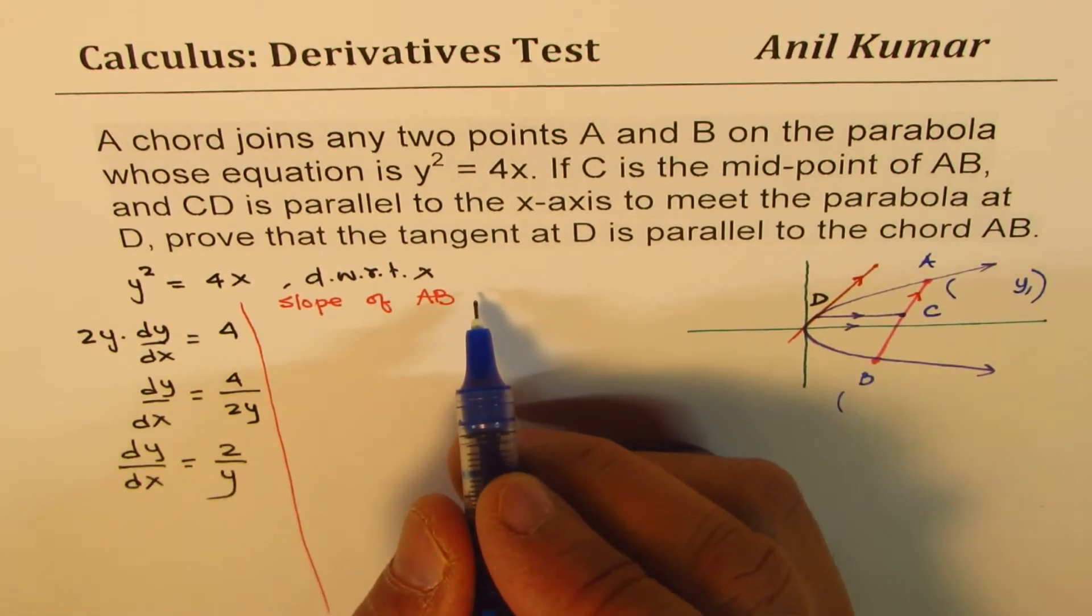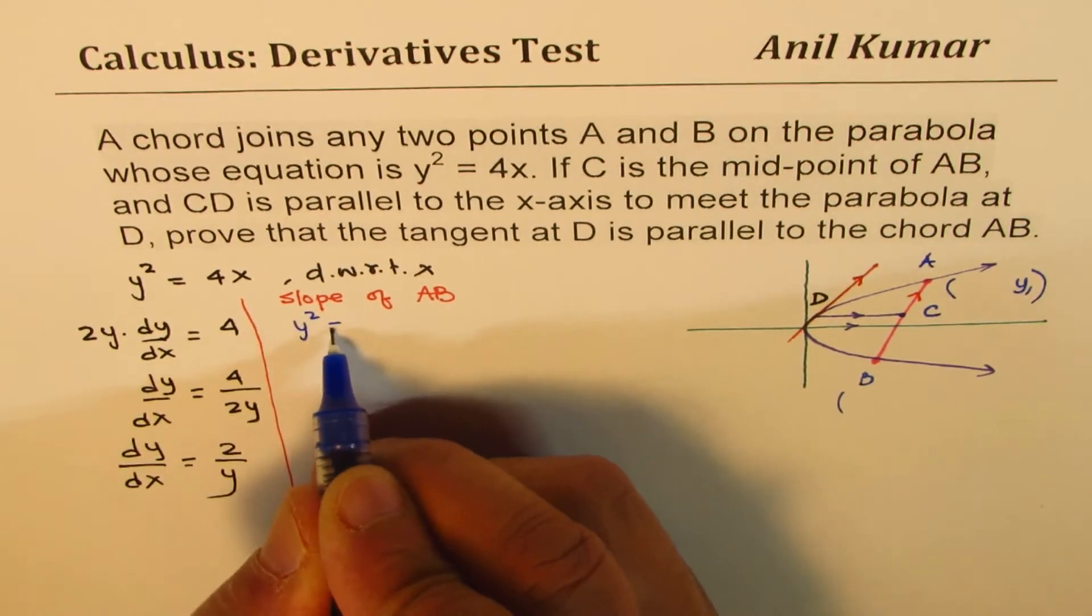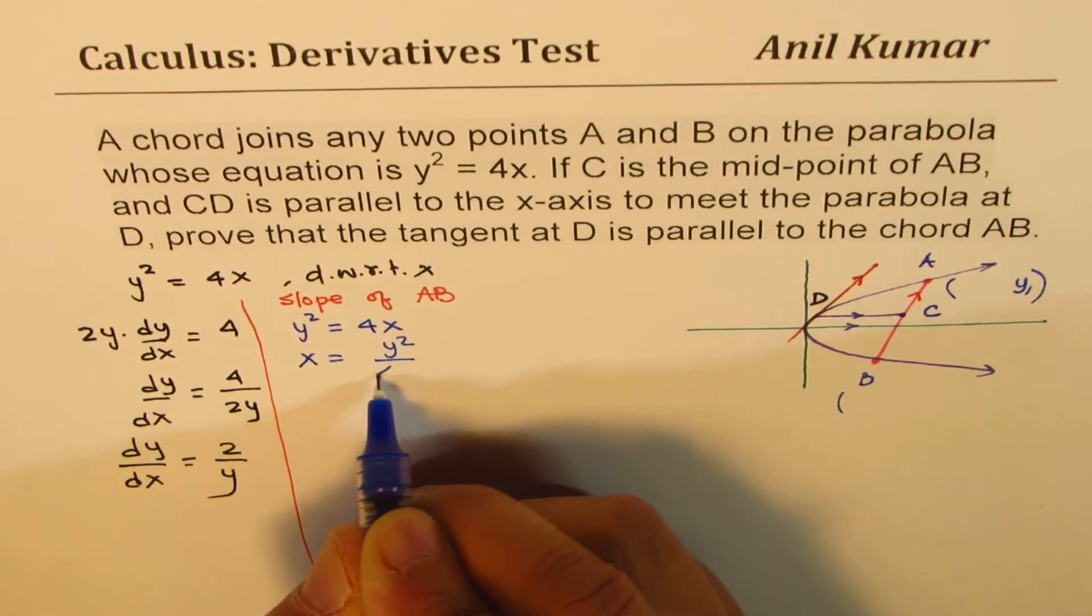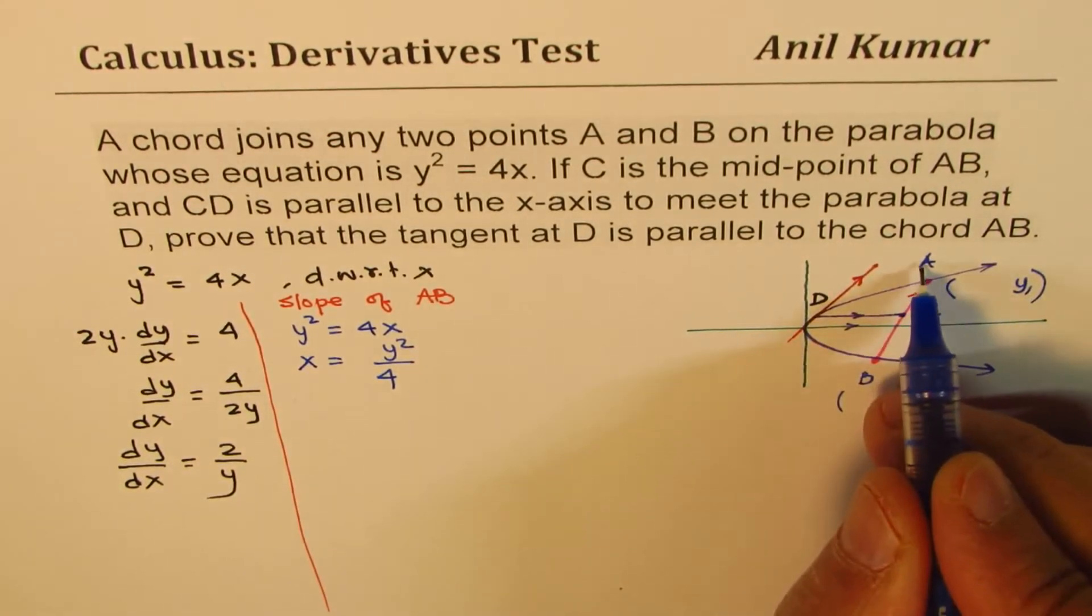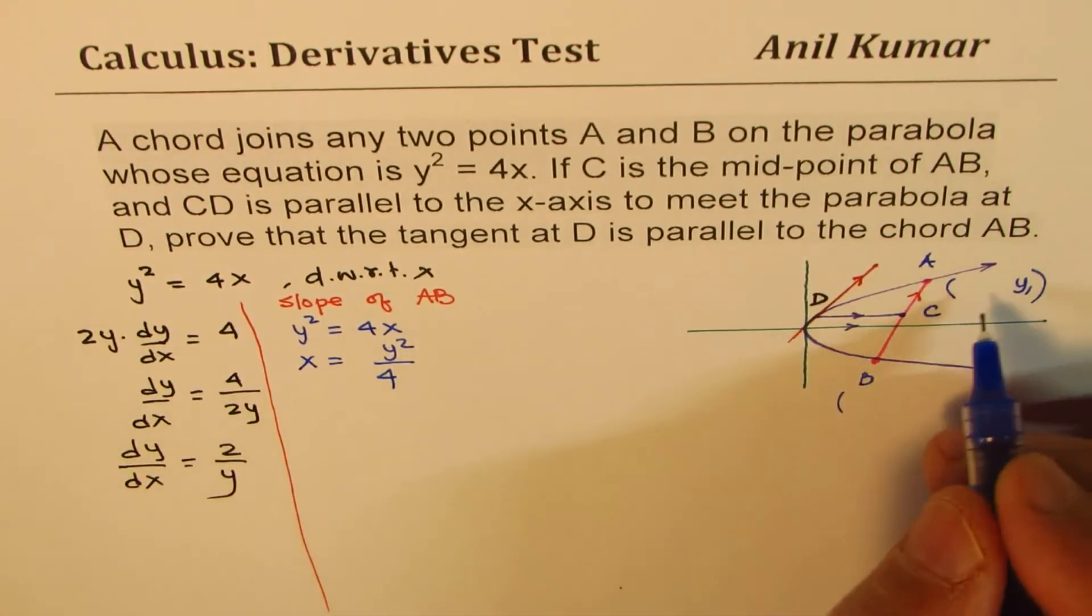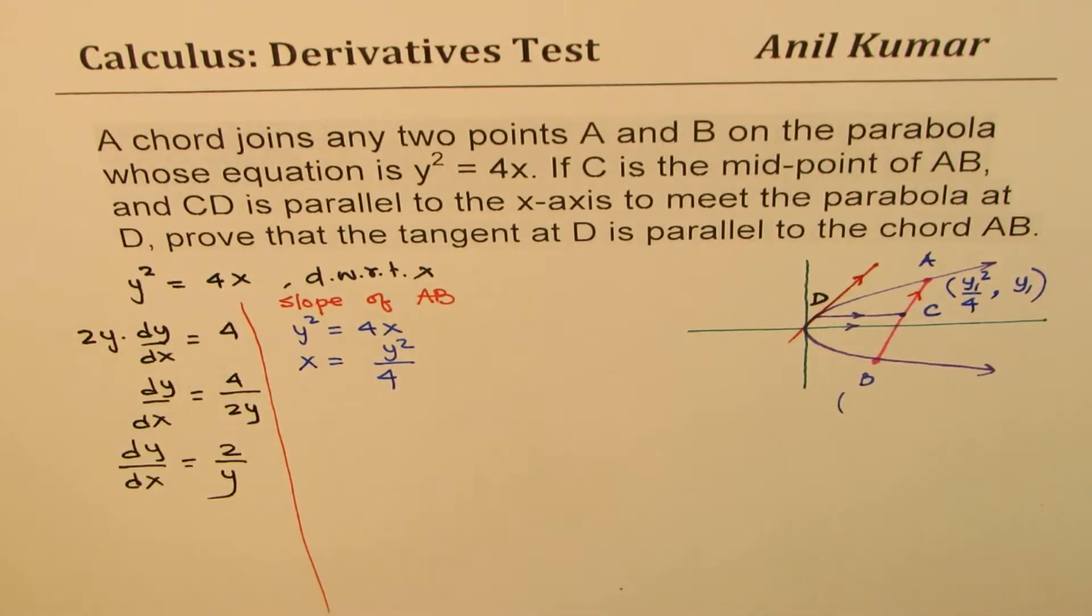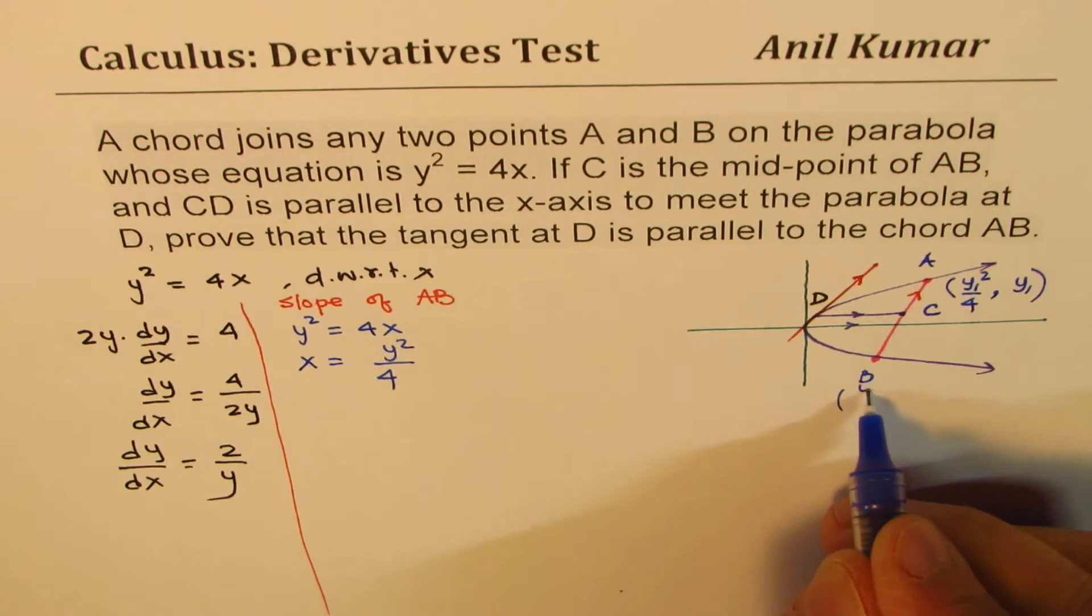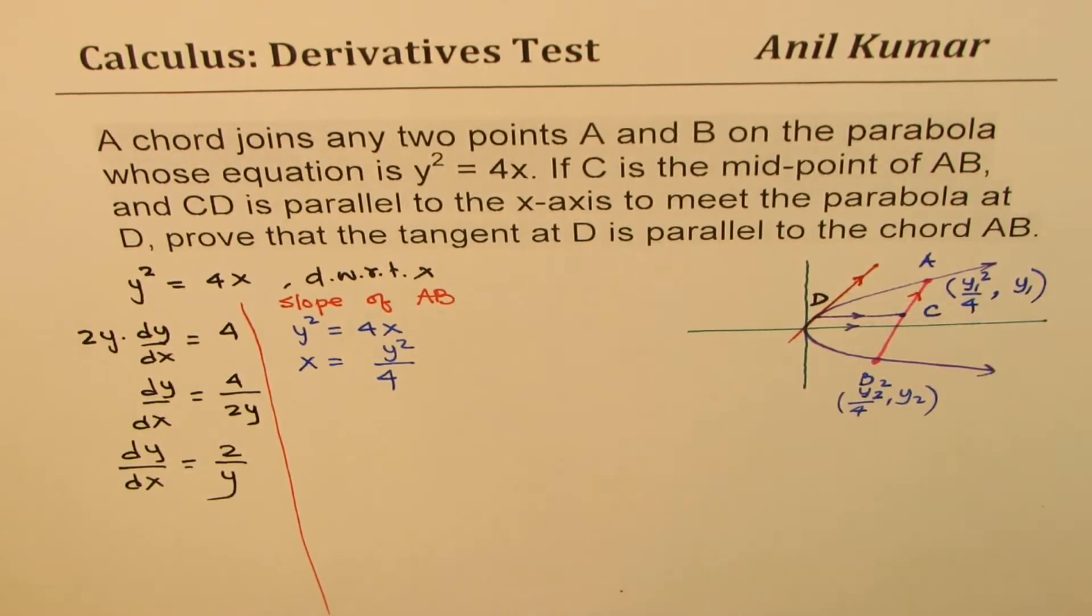I mean to say y² = 4x, that means x = y²/4. So if I write y₁ as y coordinate, the x coordinate will be y₁²/4. That involves less calculations, simpler solution. So point B could be written as (y₂²/4, y₂).